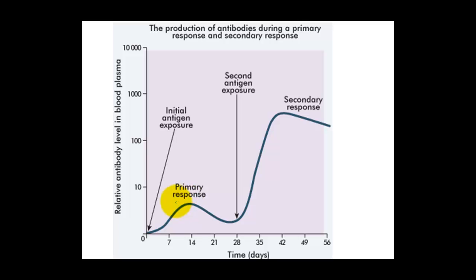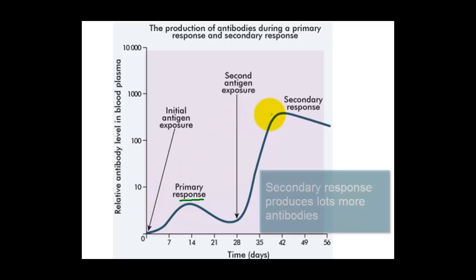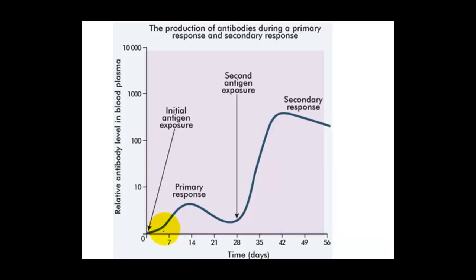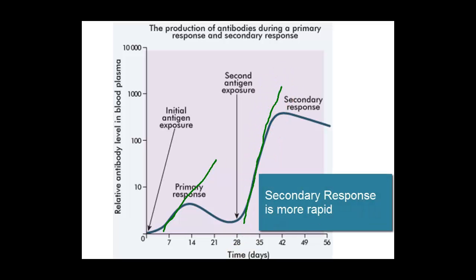The first difference is the primary response only gets up to a certain level. The secondary response is a lot higher. The next difference is how quickly these responses occur — looking at the gradient of the lines, we can see that our secondary response happens a lot quicker. It's not only a bigger response, but it happens very, very quickly.